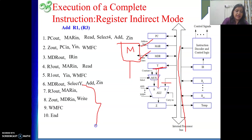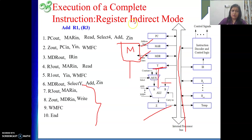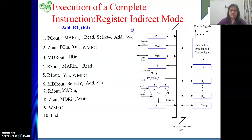Please understand these steps: to write something into memory, give the address, give the data, give the write signal, and then in the next clock cycle give WMFC. What you need to write is the result of the ALU — it is in Z register, so it is transferred to MDR. So this is about register indirect mode — though we saw it in the last video, here it is in dual role as source and destination, and that is why this explanation was needed.